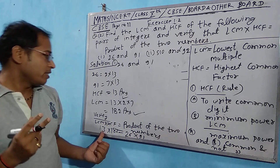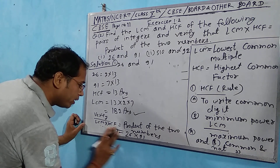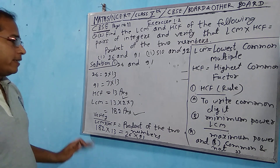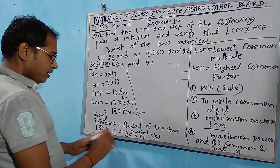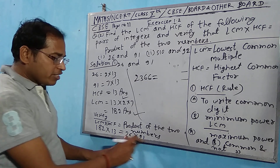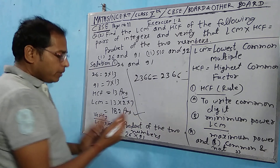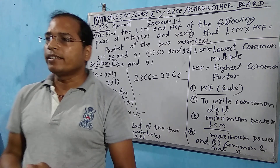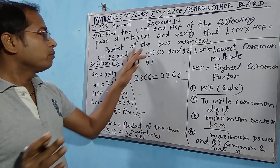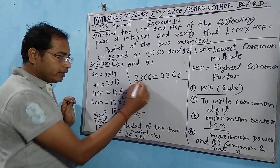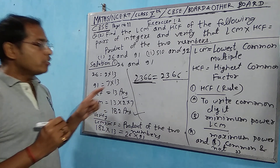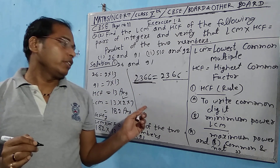LCM is 182. Write LCM as 182. HCF is 13. Now multiply them: 182 × 13 = 2366. Then 26 × 91 = 2366. We can see left side and right side are equal, so this verification is correct. 2366 equals 2366, so this sum is correct.